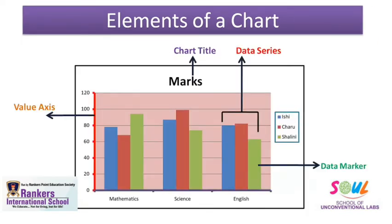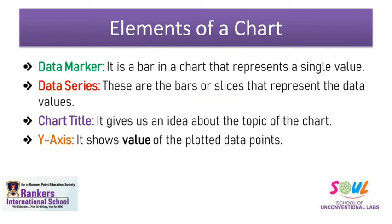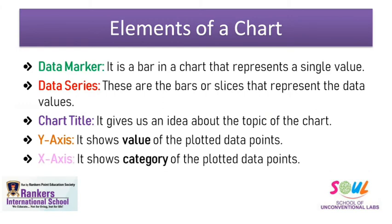The next element is value axis. In your chart, the vertical axis — the y-axis — on which you plot values is called your value axis. So the y-axis is the value axis that represents the values of the plotted data points. Next element is the category axis. The category axis is your horizontal axis in which your different categories are represented. In my chart, the different categories are subjects. So the x-axis shows the categories of the plotted data points.